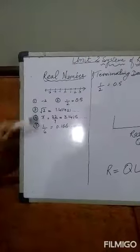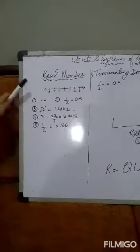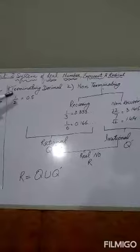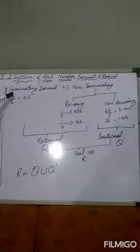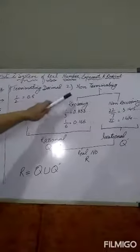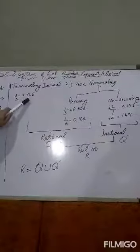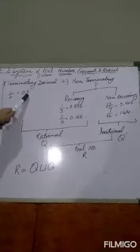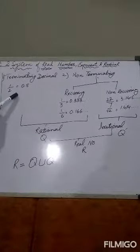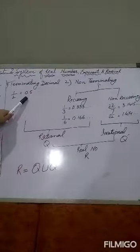So all these numbers are called real numbers. Now let us know about decimal numbers. Decimal numbers can be divided into two parts: terminating decimals and non-terminating decimals. A terminating decimal — for example, 1/2 equals 0.5 — ends at 5 and does not go on and on, so 0.5 is a terminating decimal.